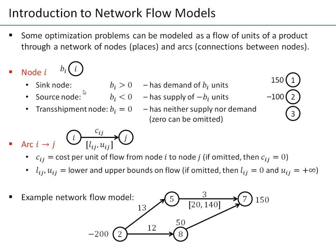The node might be a sink node, which means it has some kind of demand of bi units — for example, 150 units of some product are needed here. We might also have a source node, which has a supply, and for this we use a negative value. So writing minus 100 next to a node means the node has a demand of minus 100, which effectively means it has a supply of 100.